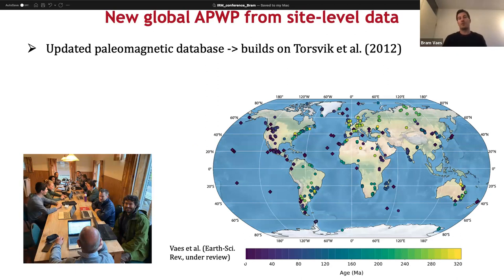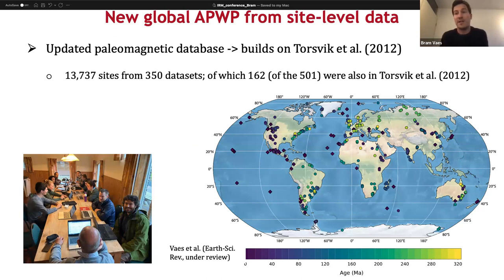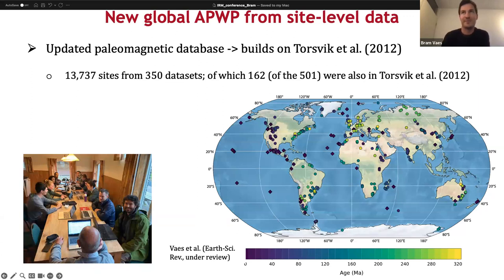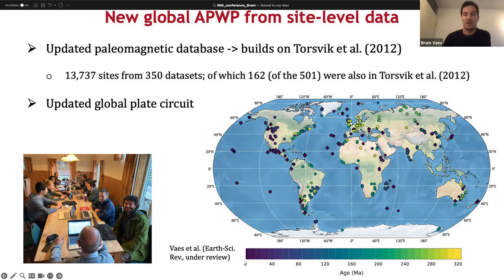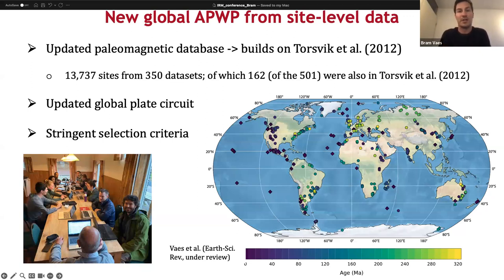To calculate a new global apparent polar wander path from site-level data, we updated the paleomagnetic database, building upon the work of Torsvik and others just over 10 years ago. In total, there are more than 13,000 sites from 350 datasets. We did not compile all individual site-level data, because that would have taken years — this already took us a couple of weeks with all the people you see in the bottom left picture. Interestingly, only a third of the datasets used for the new path was also in the Torsvik and others database, because we applied more stringent selection criteria. In addition, we also updated the global plate circuit used to rotate the poles from all these different continents to the reference plate, for which we use Africa, as is typically done.